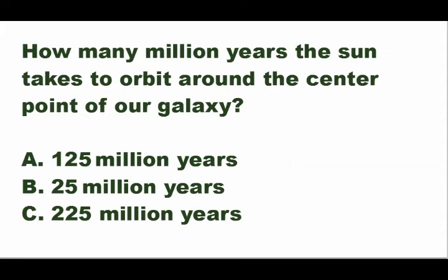The answer is letter C — 225 million years. The sun takes 225 million years to orbit around the center point of our galaxy.